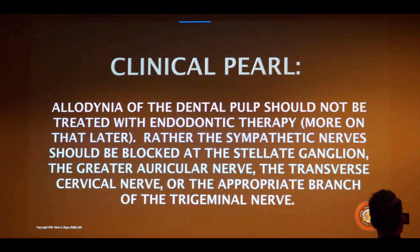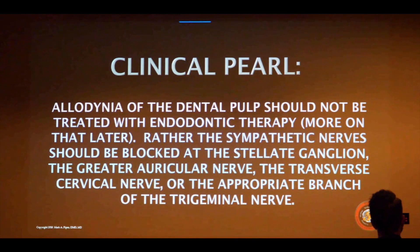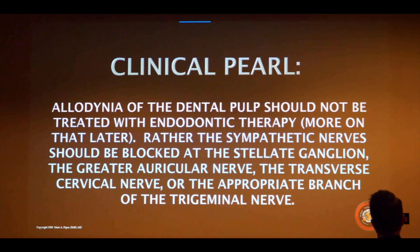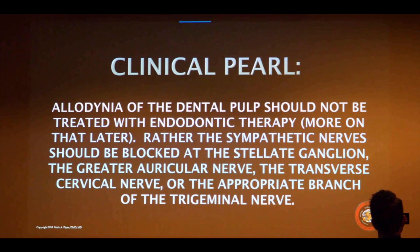As a pearl: if you have a tooth that is sensitive to cold, and it's the sympathetic endotype that's causing the cold sensitivity, when you block the greater auricular nerve or transverse cervical a little bit lower, that sensitivity goes away immediately. The nerve block stops the cold sensitivity.